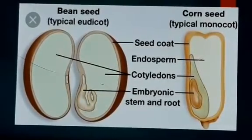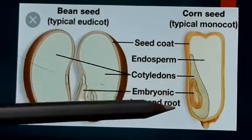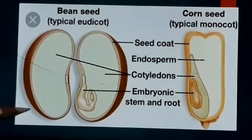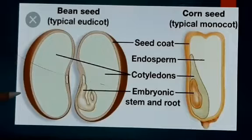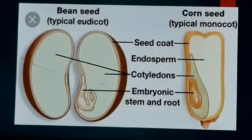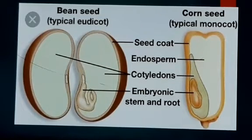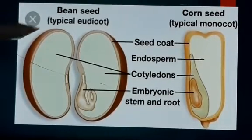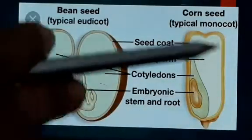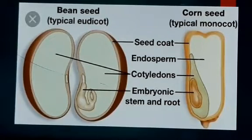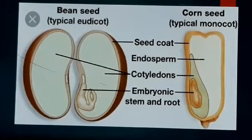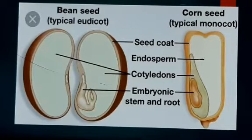Look here in this diagram. This diagram shows two types of seed. I will explain the parts of a seed with the help of the dicot seed, and I will also explain what dicot and monocot are. Let us start with the first part — the seed coat. This outer hard covering of the seed is known as the seed coat, also called testa. The function of the seed coat is to provide protection to the seed.